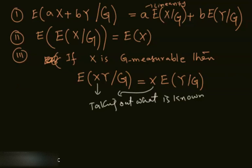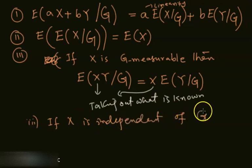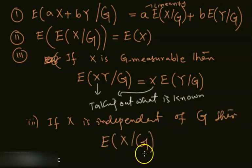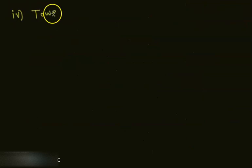Property four: if X is independent of the sigma field G, then E[X|G] = E[X]. Because G has nothing to do with X, it reduces to the ordinary expectation of X.